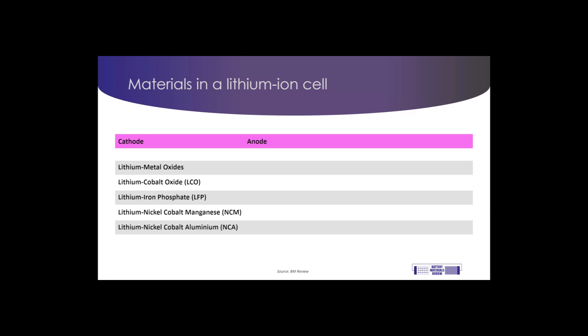For the anode, we generally use graphite. This is because graphite can form a layered structure and lithium ions can be stored easily between the layers. It is increasingly more common to add small amounts of silicon to improve the properties of graphite in electric vehicle batteries.